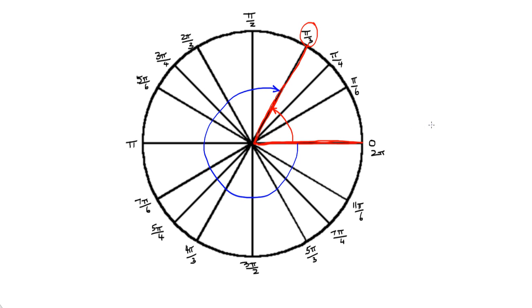But the coterminal angle for that is going the other way, or at least one coterminal angle. So what if I go clockwise? What if I go clockwise around this circle instead of counterclockwise? I know I'm going to have a negative angle, but how much of a negative angle have I actually gone? I've gone three quarters of the circle plus one additional line, right?